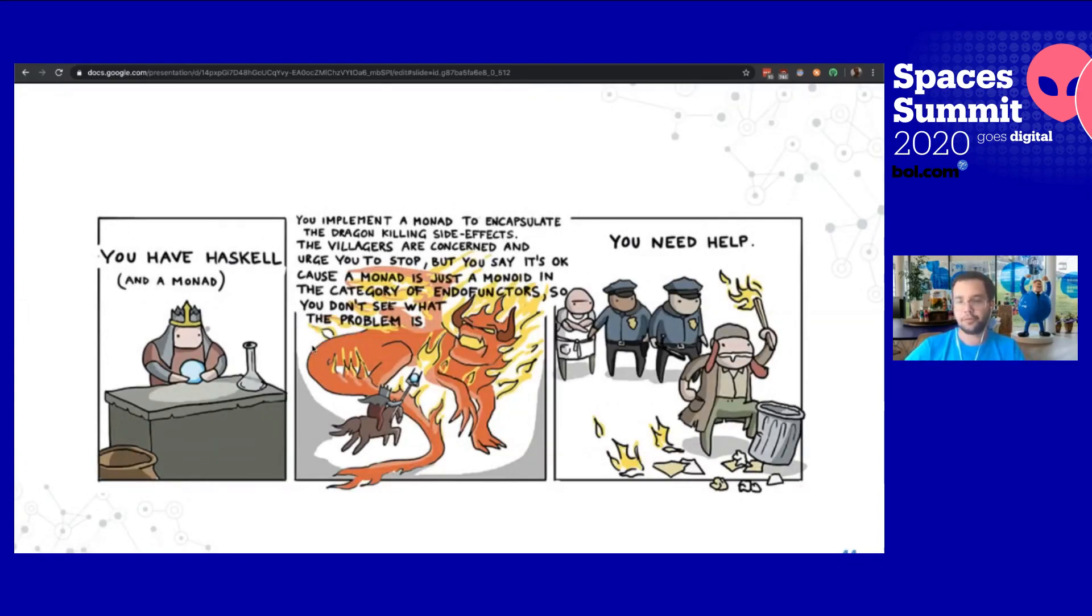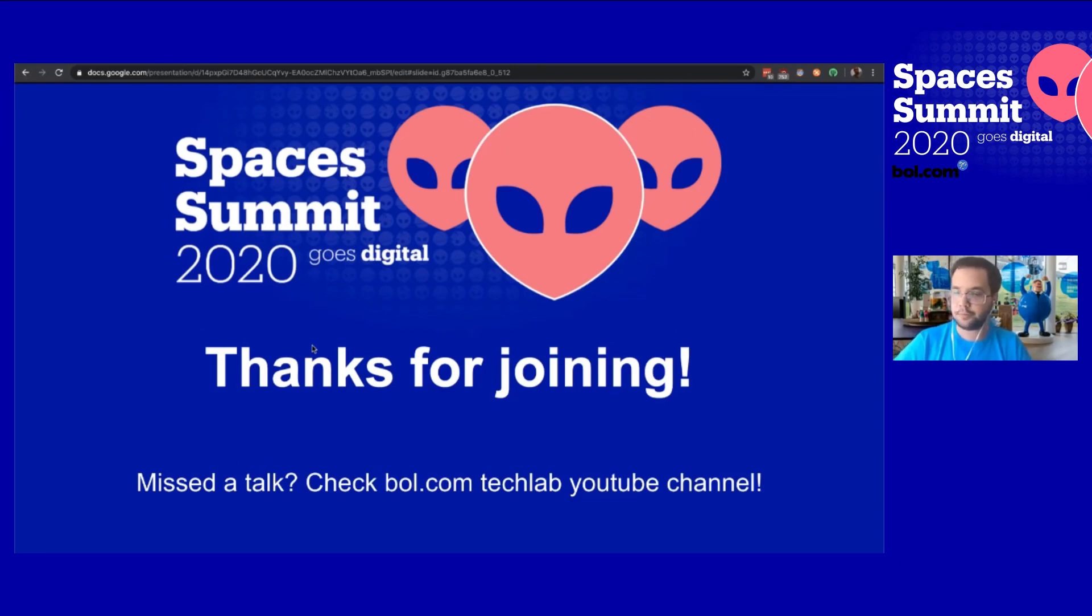And to end, of course, we have how to kill a dragon with Haskell. Well, you just have to implement a monad to capture the dragon's side killing effects. And the villagers that start to be concerned, they call you a wizard. And then you need help because it's quite hard. And if you start to study a lot, you start to get a little bit crazy. And that's it. We have 10 minutes for questions and stuff. Thanks. I really enjoyed your talk. Really clear examples. Excellent main course. And lots of research materials.